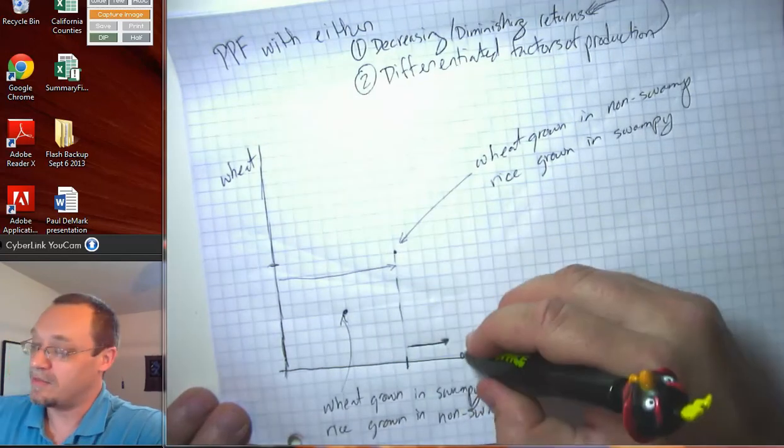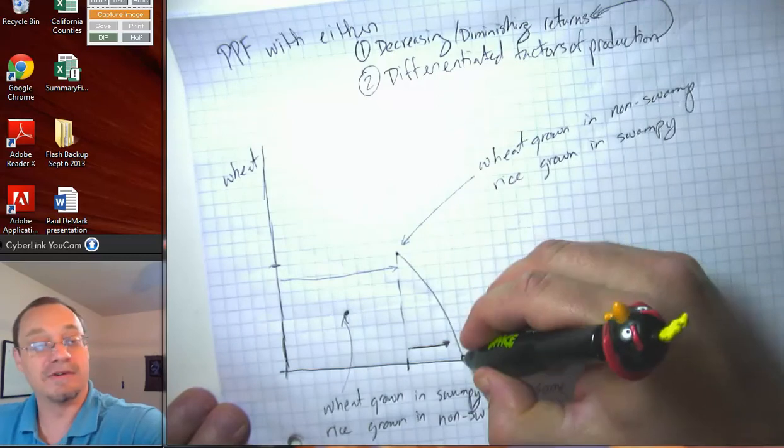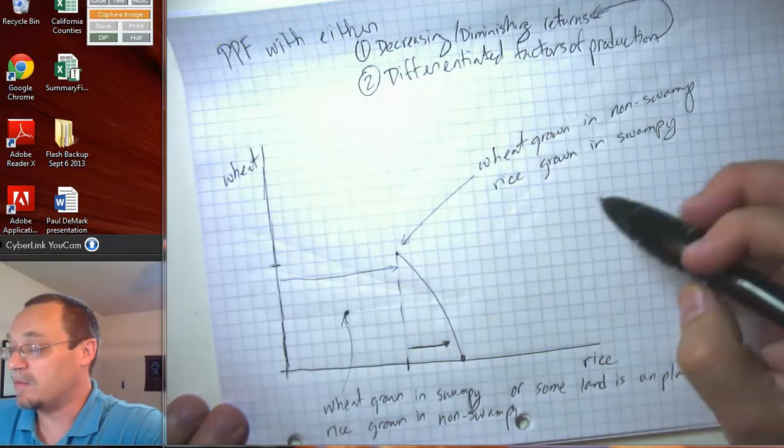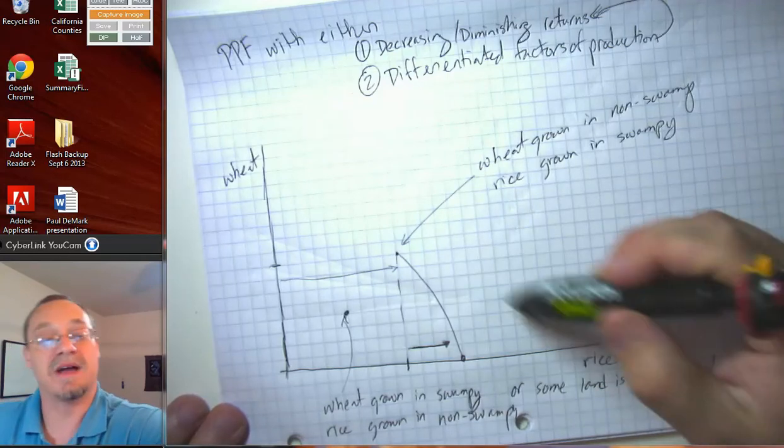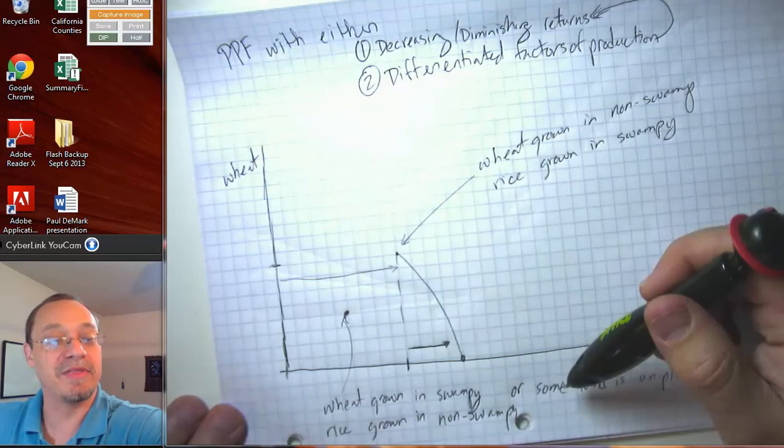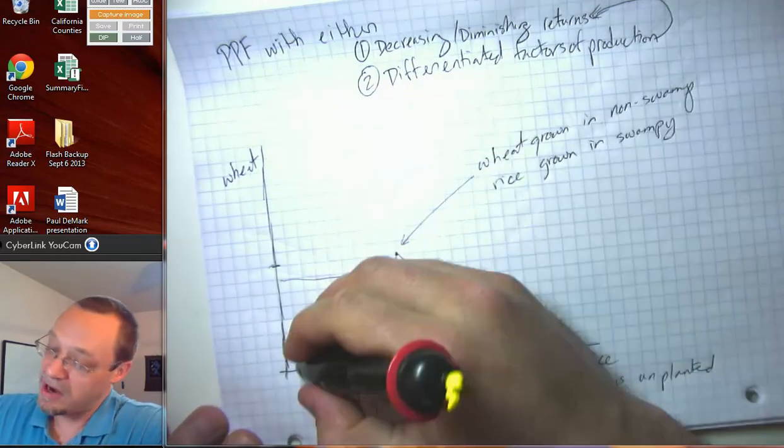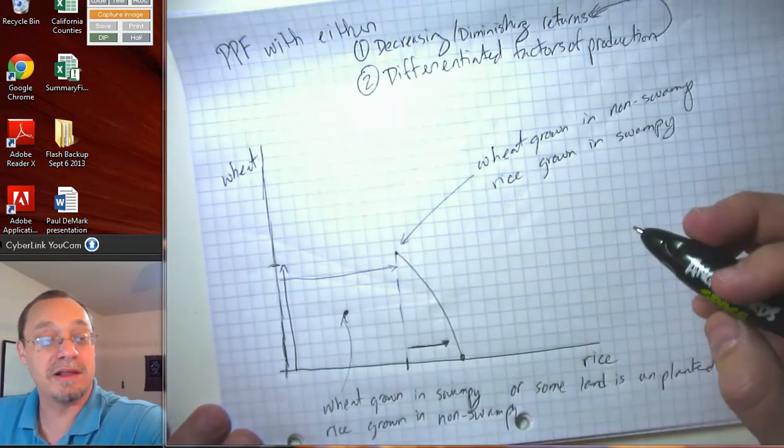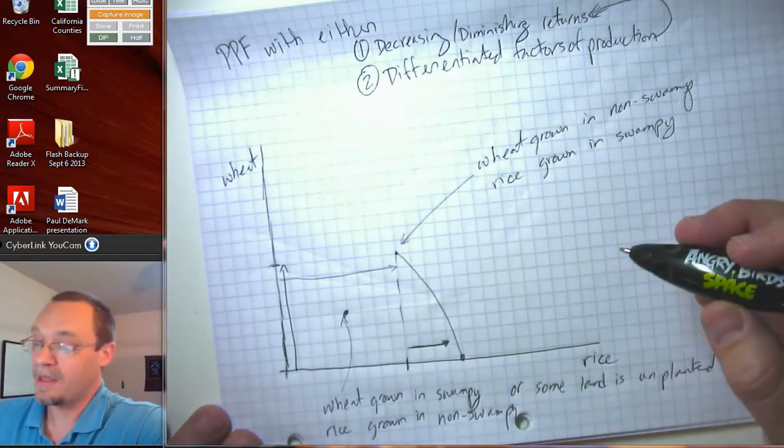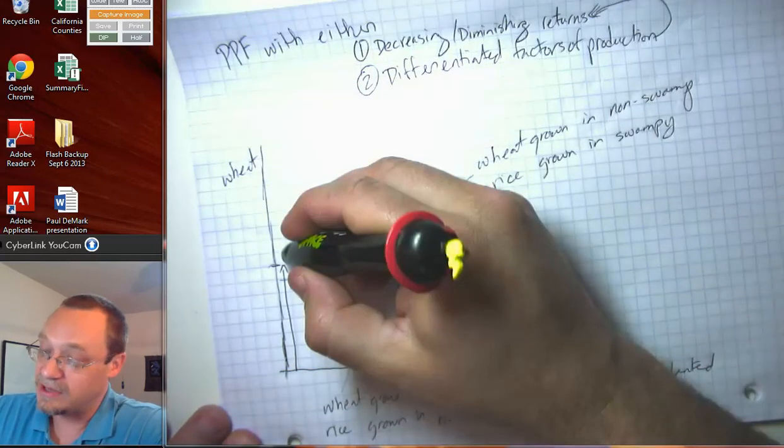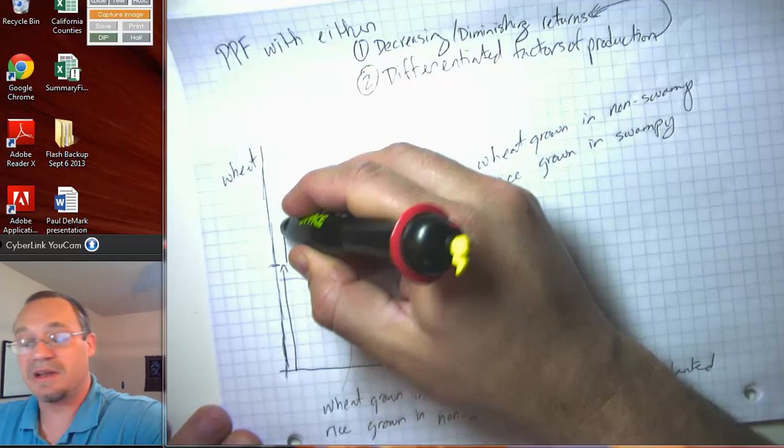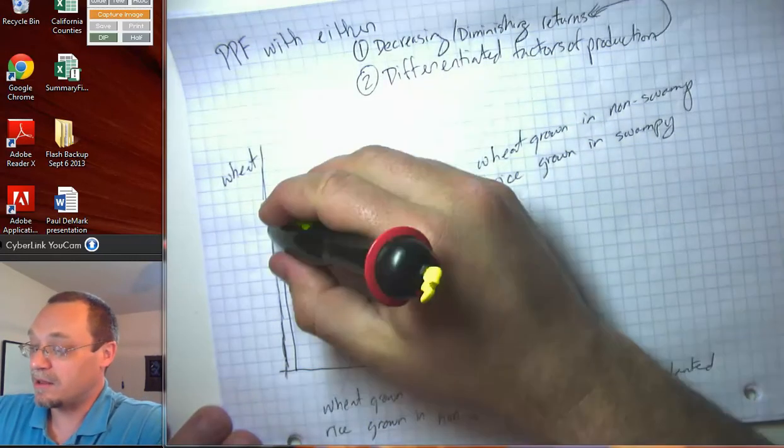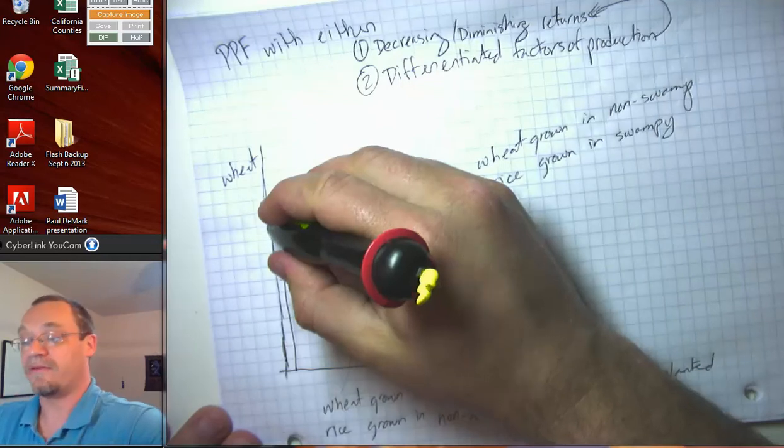So it might be that the PPF goes like that. If we made the opposite choice, if we decided that we wanted to just totally maximize our wheat production and give up on the idea of rice production at all, well, we were able to increase wheat production by that much by planting wheat in all the land that was good for wheat. If we then go and try to increase wheat production further, we're probably going to get a smaller increase in production.